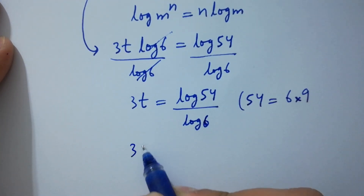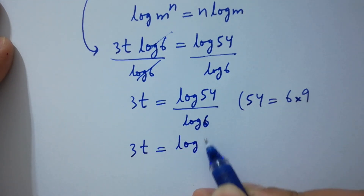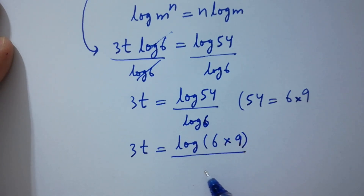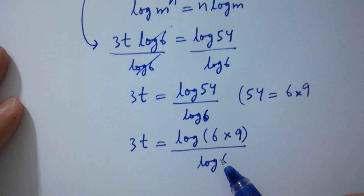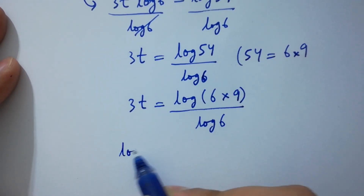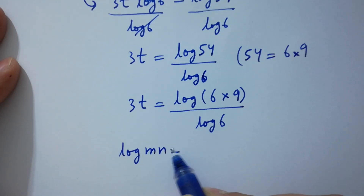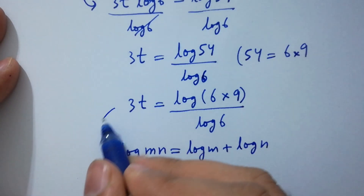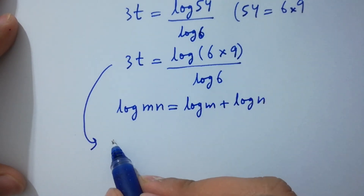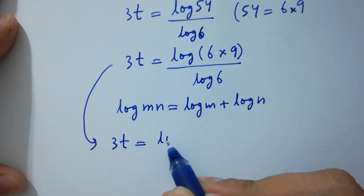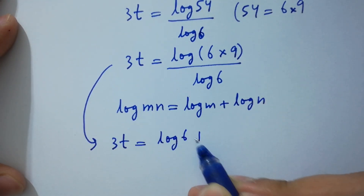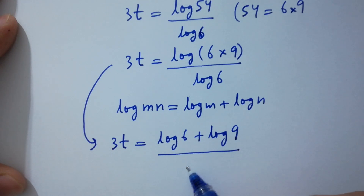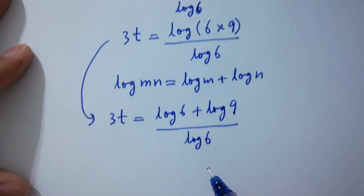So 3t equals log(6 times 9) over log 6. Since log(mn) equals log m plus log n, we get 3t equals (log 6 plus log 9) over log 6.